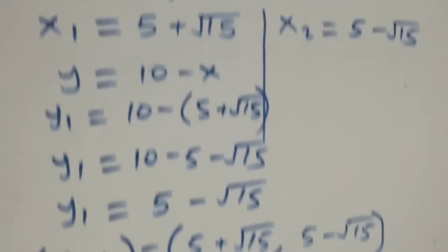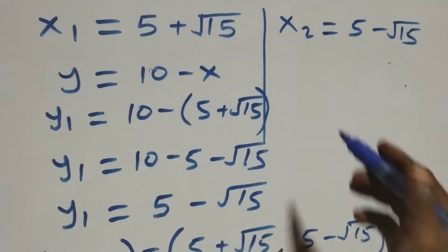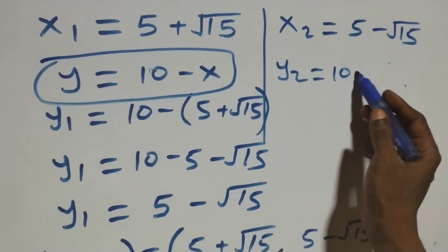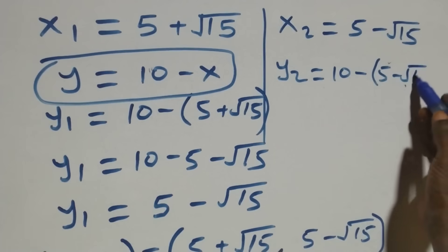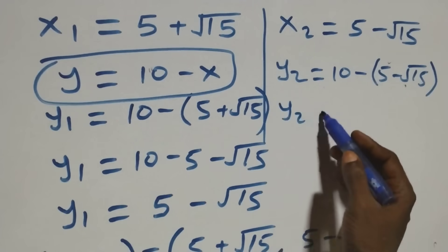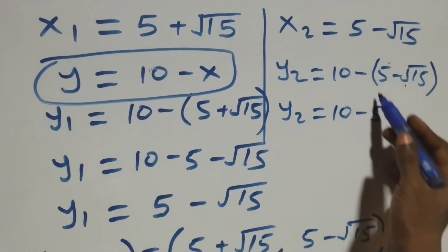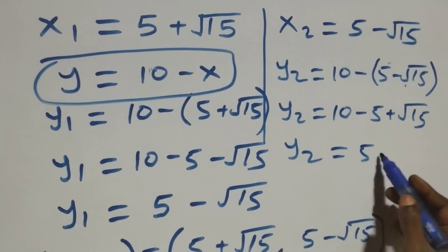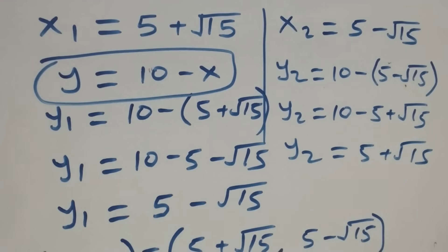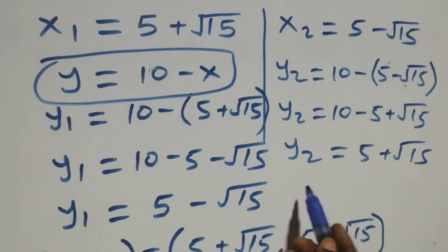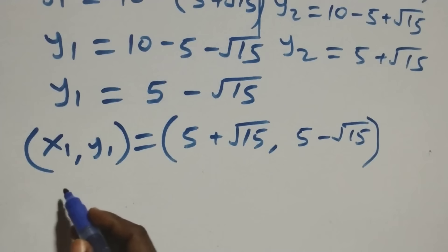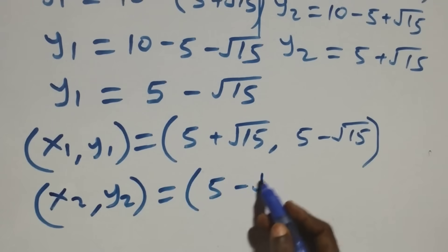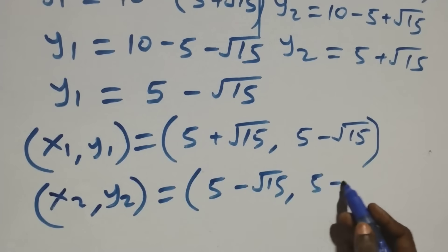Solving on this side as well, y₂ equals to ten minus x₂, which is ten minus (5 minus √15). This becomes y₂ equals to ten minus 5 plus √15, so y₂ equals to 5 plus √15. The second solution is: x₂ = 5 minus √15, y₂ = 5 plus √15.